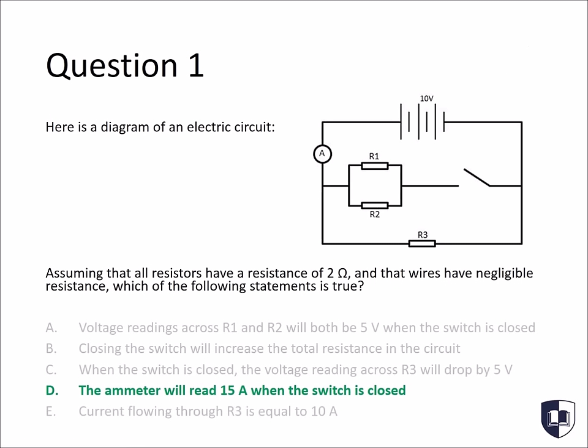This question may have come as a shock, making all of your past physics memories come flooding back. But if you understand the basic principles then you'll be able to answer the question easily. The correct statement is D, the ammeter will read 15 amps when the switch is closed. But, in order to look at why this is right, we need to go over the basic theory of electrical circuits.